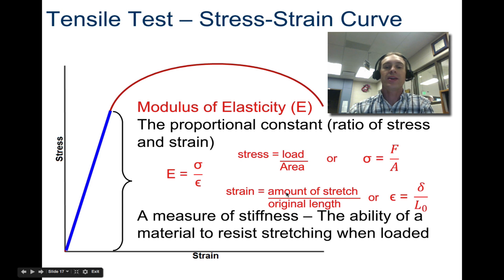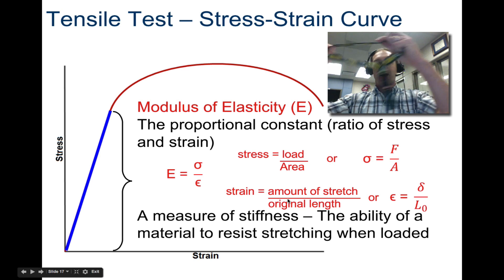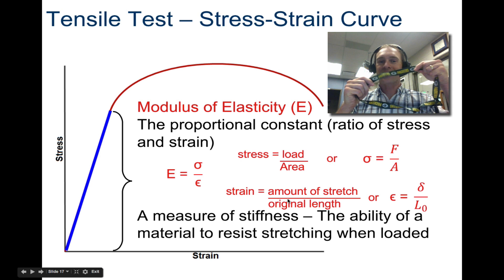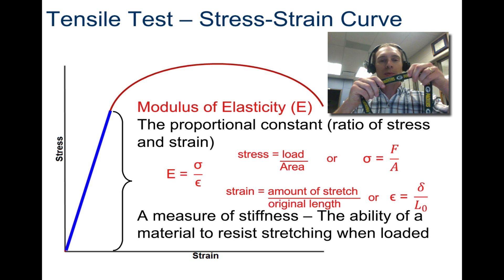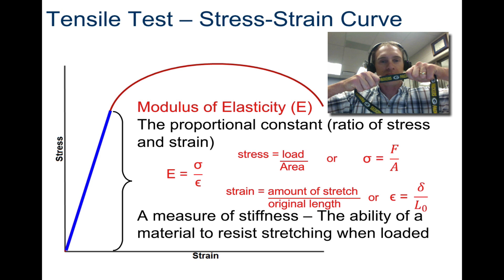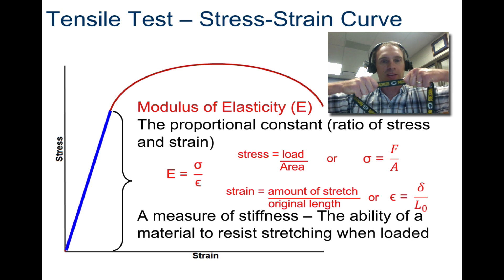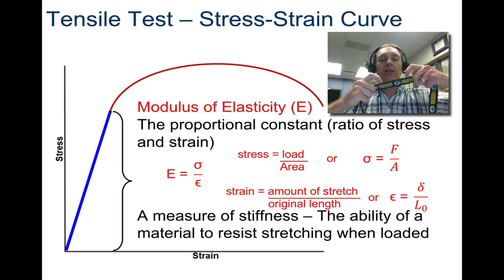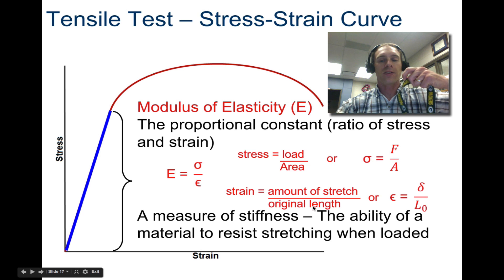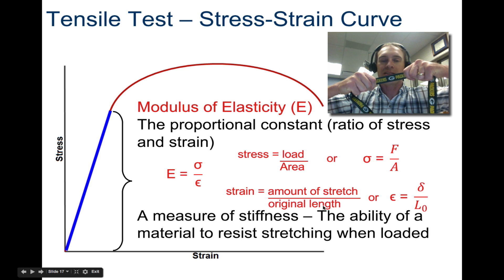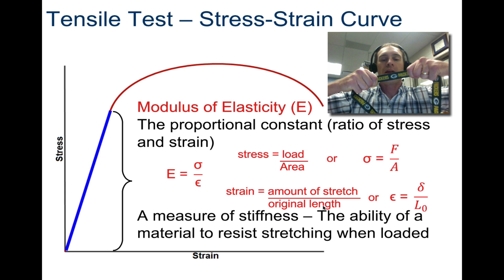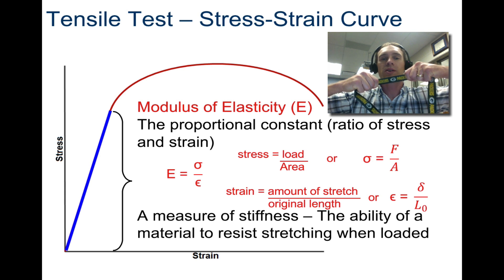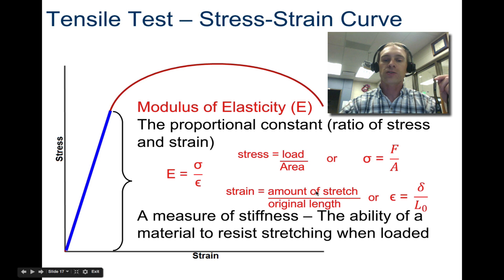Strain is the amount of stretch divided by the original length. If I take an object like this super fantastic lanyard right here, and I were to apply a stress to this, a tension stress, and pull it apart, if I take the original length that goes in the denominator down here, the amount that I actually can stretch it, and this is not a stretching material at all, but I can stretch it a small amount. That small amount that I stretch it divided by the original length, that's my strain amount.